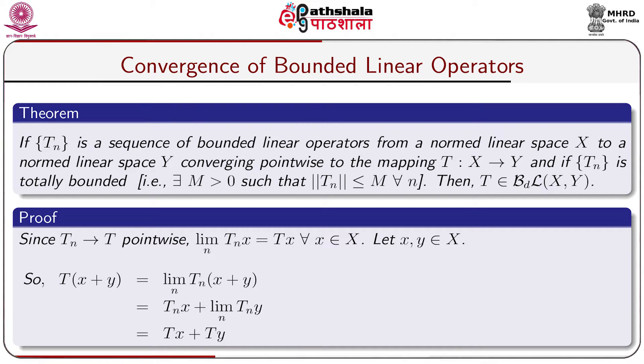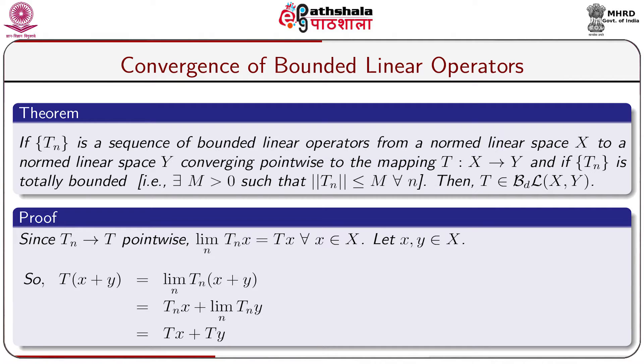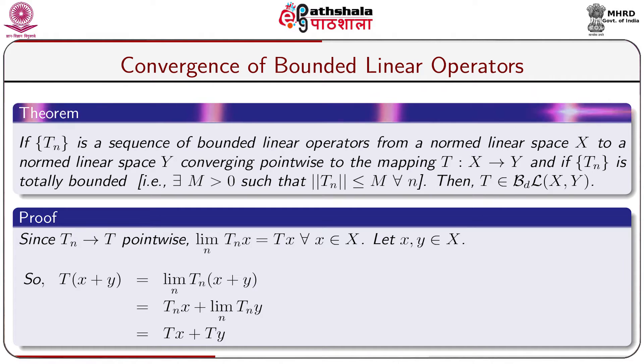We will also learn that if a sequence of operators converges pointwise to a bounded linear operator and the sequence is totally bounded, then the limit operator T is again a bounded linear operator from X to Y. Theorem: if T_n is a sequence of bounded linear operators from a normed linear space X to a normed linear space Y, converging pointwise to a mapping T from X to Y, and if T_n is totally bounded — meaning there exists a constant M > 0 such that norm of T_n ≤ M for all n — then T belongs to BdL(X,Y).